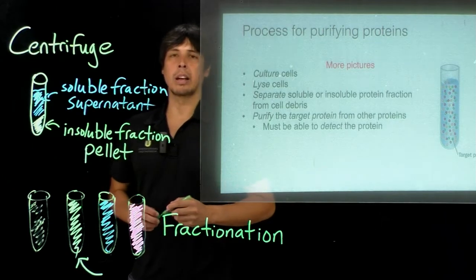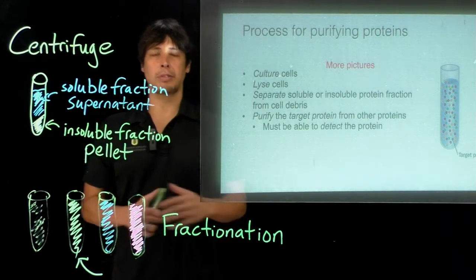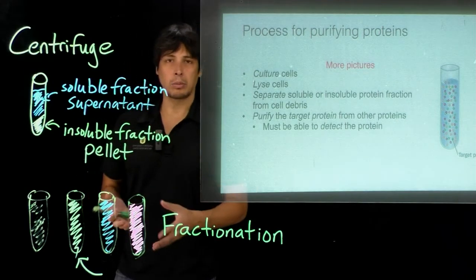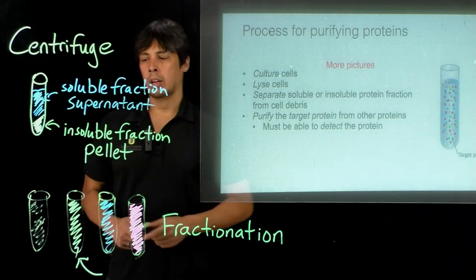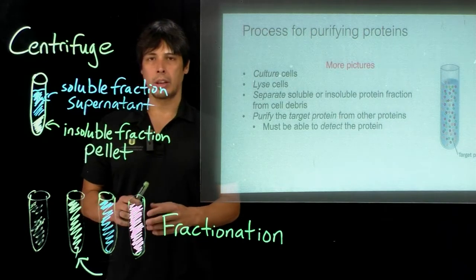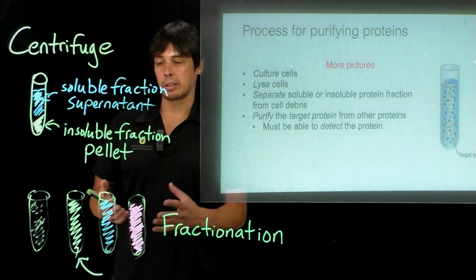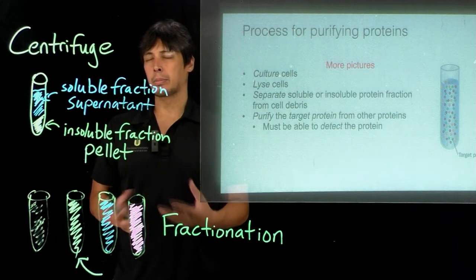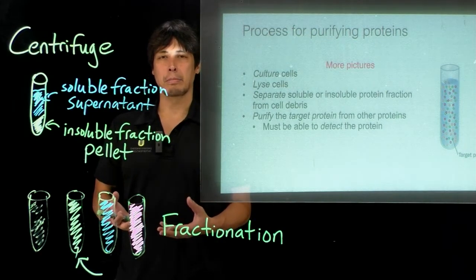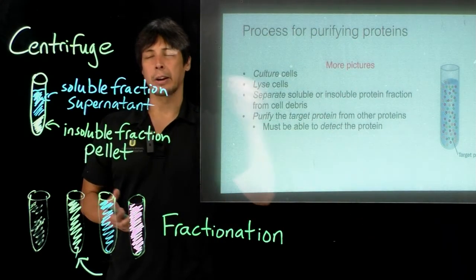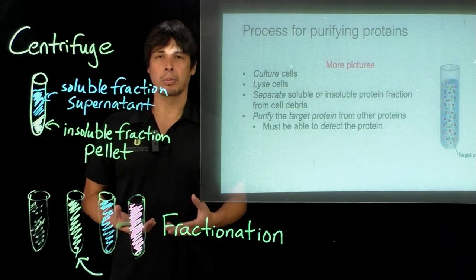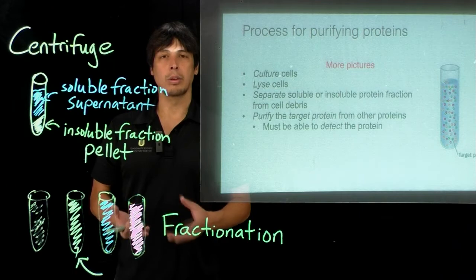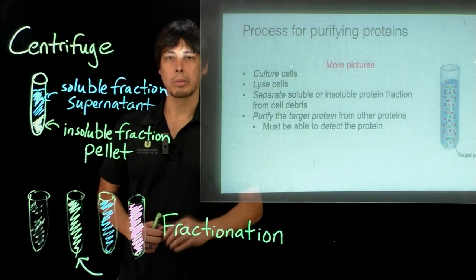You do fractionation by a variety of ways, but what's key is that after you fractionate the proteins — after you separate all the proteins within the cell — you have to be able to detect which protein is actually yours. In this case, we have it color-coded, but in practice, not all proteins are actually colored like this in a diagram. So you need a variety of different ways to be able to detect proteins so that you know you actually have the protein you're looking to purify.